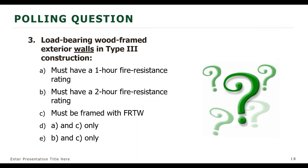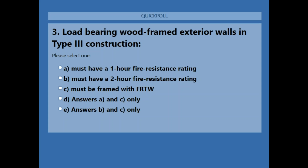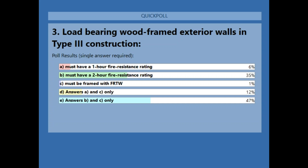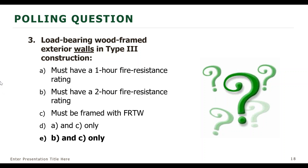Poll question: Load bearing wood framed exterior walls in type 3 construction — must they have a 1-hour fire resistance rating, a 2-hour fire resistance rating, must be framed with fire retardant treated wood, answers A and C only, or answers B and C only? Results: 47% say B and C only, 35% say must have a 2-hour rating. The correct answer is E — B and C only. This was tricky because the stem specified wood framed: if it is wood framed, yes, it must be FRTW and have a 2-hour rating. Non-combustible walls on the exterior are also an option.